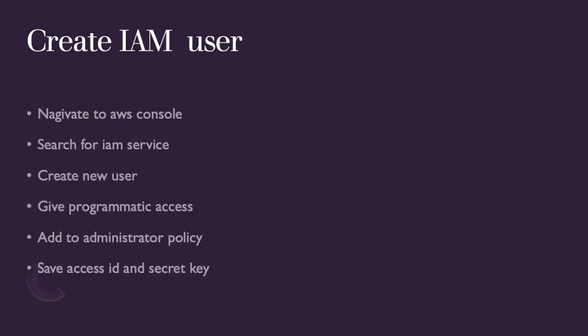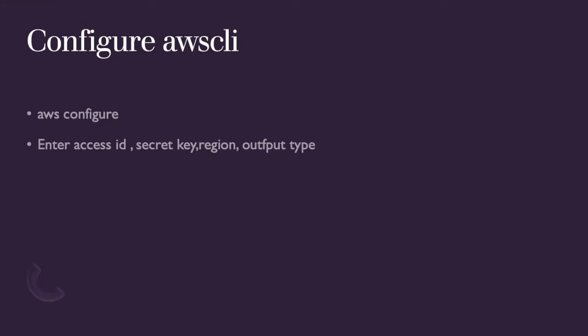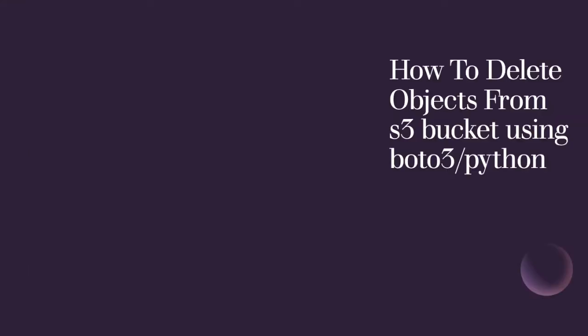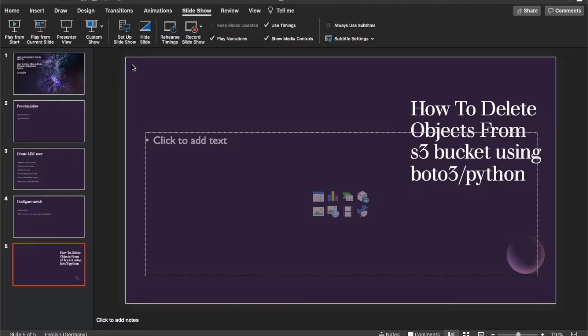The next things covered in tutorial one are: how to create an IAM user, how to assign administrative policy on your Identity and Access Management user, and how to get your access ID and secret key. Also important is how to configure your AWS CLI. If you haven't configured these three things, your code will not work. Many people complain that their code gives errors because they skipped this configuration step. The objective of this tutorial is how to delete objects from an S3 bucket using boto3 Python.